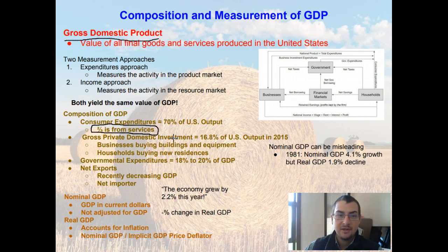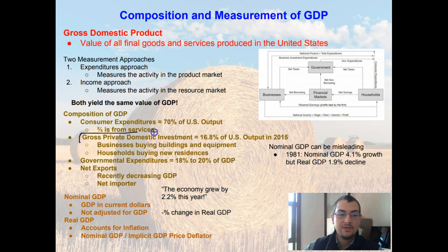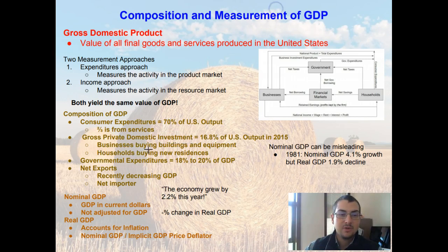Services include things like insurance, financial services, your cell phone bill, your TV and internet bill — all considered services and part of gross domestic product. We also find that gross private domestic investment makes up 16.8% of U.S. output as of 2015. This includes long-term investments by businesses, such as buying or building buildings and purchasing equipment.